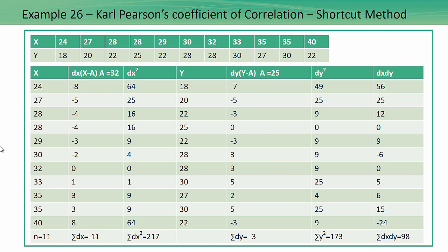Now let's come to the next problem — finding Karl Pearson's coefficient of correlation using the shortcut method. Everything remains the same in terms of making the table, only we will assume a mean. The best way to assume a mean is to take a middle value; I have taken 32 here — you can take 30 or 32, whatever you like. We find DX, which is for example 24 minus 32, 27 minus 32, and so on. N equals 11, and summation of DX equals minus 11.